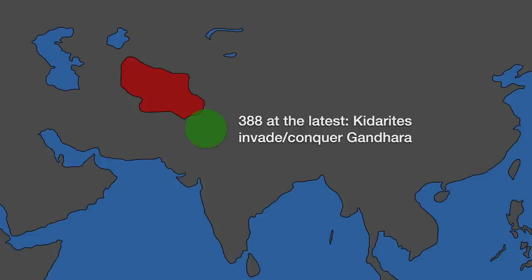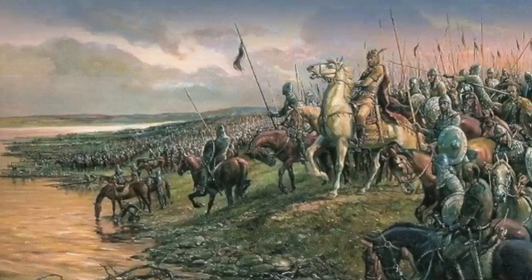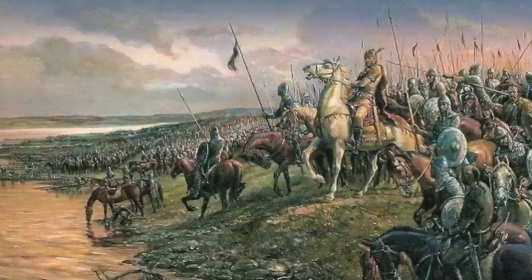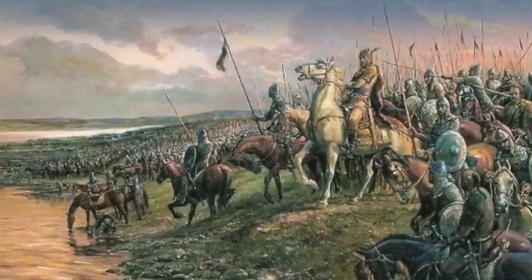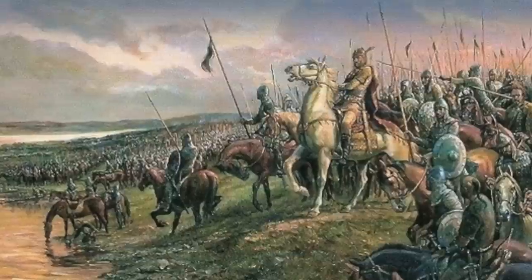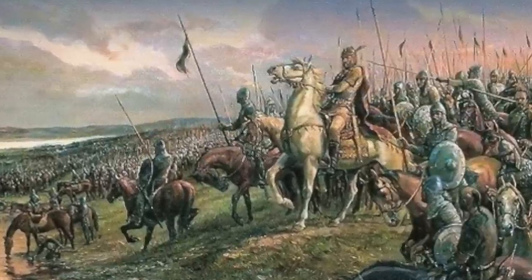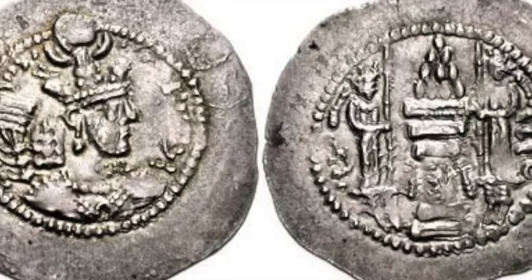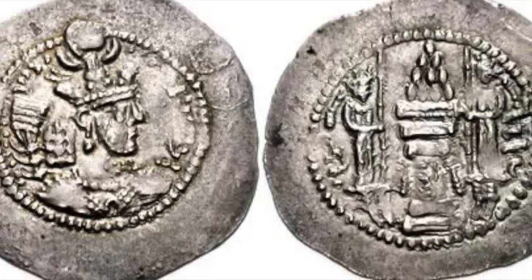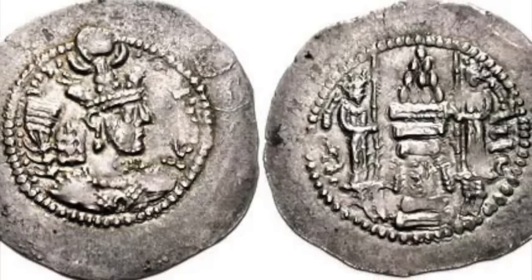By 388 at the very latest, these Kidarites appear to have crossed the Hindu Kush mountains and established control over Gandhara. We don't have much evidence for this outside of coins, but what we do have appears to suggest that the Kidarites never directly referred to themselves as Huns — that was instead a term used by the Persians, who attempted to drive them from Bactria in a series of wars between about 420 and about 450. In 453, however, the Persian Shah Yazdegerd II was defeated, and the Sasanians apparently found themselves in a tributary position to the Kidarite state.